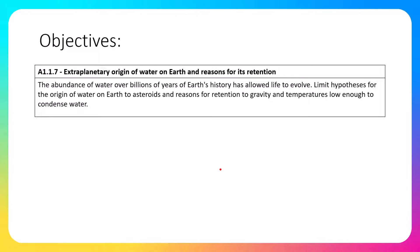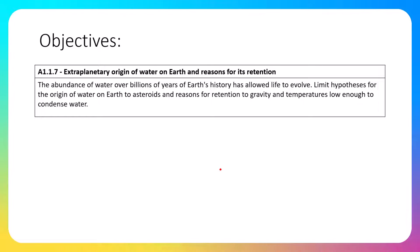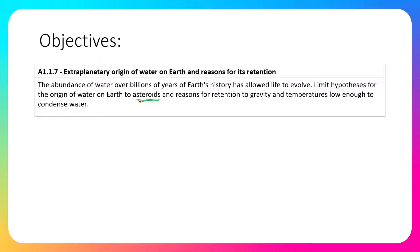Hey guys, Mr. P. In this video we're going to talk specifically about the origin of water on Earth, focusing on how the abundance of water over billions of years of Earth's history has allowed life to evolve on our planet. We're going to limit our hypotheses to asteroids as the origin of water, and reasons for retention to gravity and temperatures low enough to condense water.